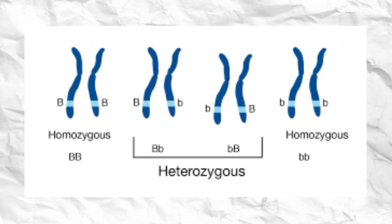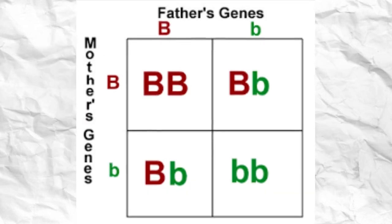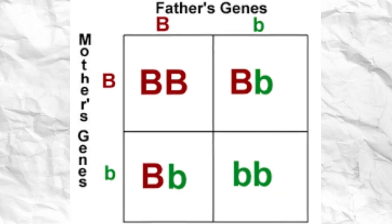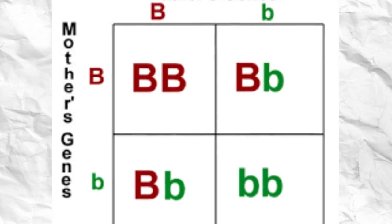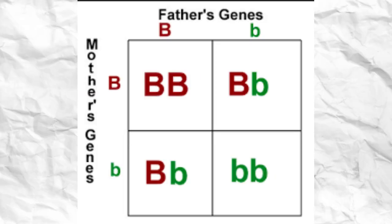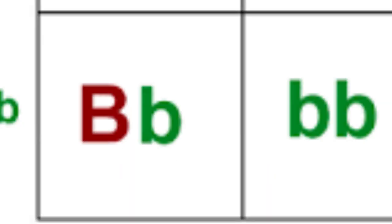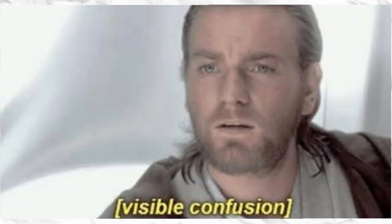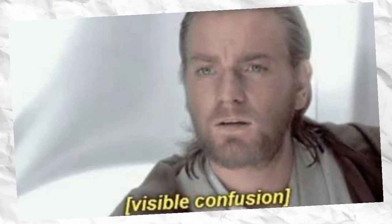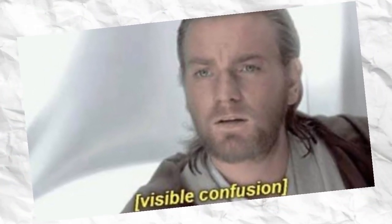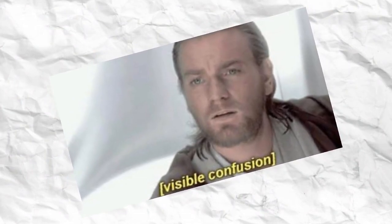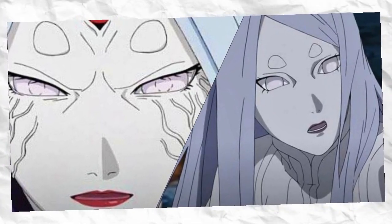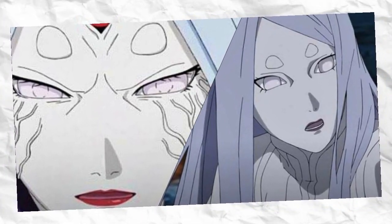Homozygous and heterozygous are terms we need to go over. Homozygous means you have two of the same exact trait — either two dominants or two recessives. Heterozygous means you have one dominant and one recessive. You can pause and go back to look into that a bit more, but now let's dive into how this is relevant to the Narutoverse.